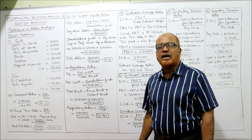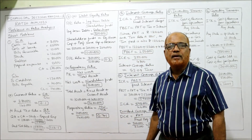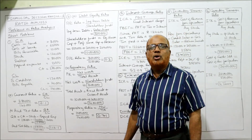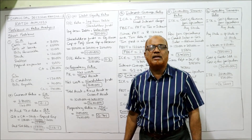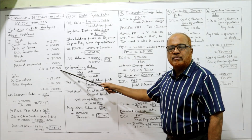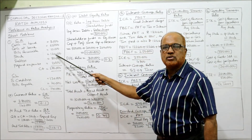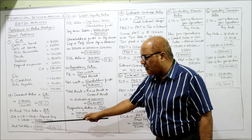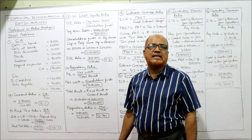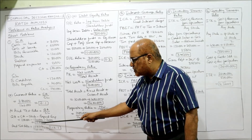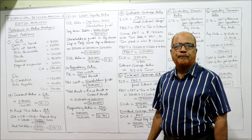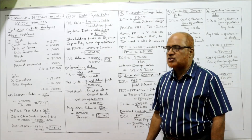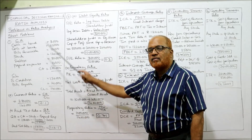Now acid test ratio. The formula is quick assets divided by current liabilities. Quick assets equals current assets minus inventory, that is minus stock and minus prepaid expenses. So 2,80,000 minus 1,20,000 (stock) minus 2,000 (prepaid expenses) equals 1,58,000 as quick assets. Current liabilities are 1,40,000. So 1,58,000 divided by 1,40,000 gives 1.13, written as 1.13:1. Both ratios are now calculated and the first short problem is complete.